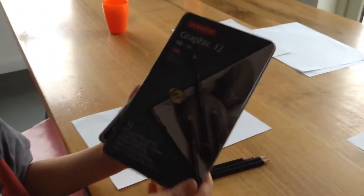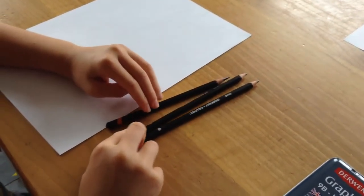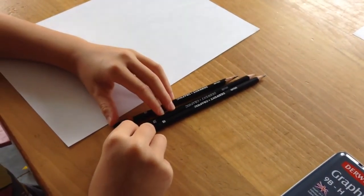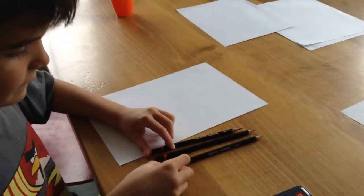These are the pencils inside. I've taken out three to use: 4B, 3B, and 6B. We're going to be using them, and for the outer lines I'm going to use 4B.